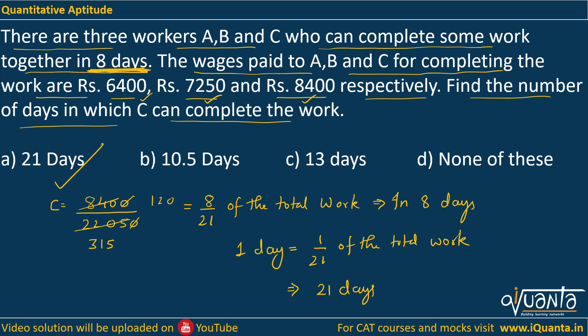So option A — 21 days — is the correct answer. The concept here is that the fraction of wage taken by a particular person is equal to the fraction of work done by him. This question can also be asked the other way around: you may be given the fraction of work done by a person and then asked the money that should be provided to that person. The same concept applies.